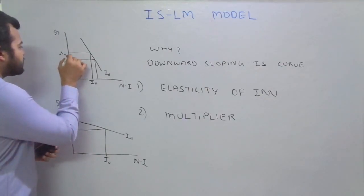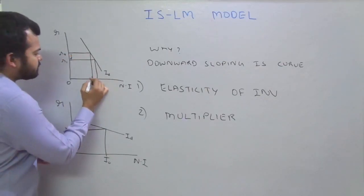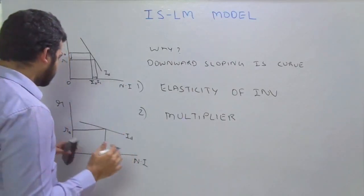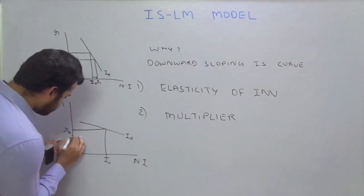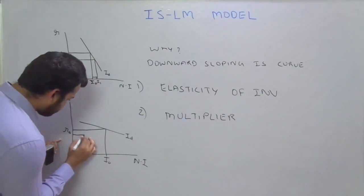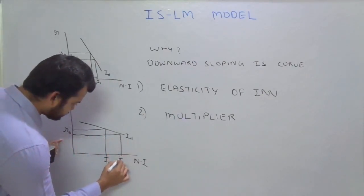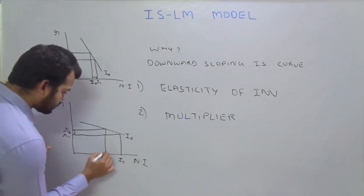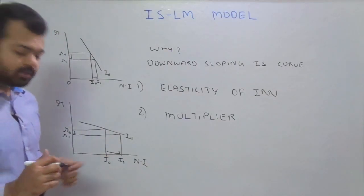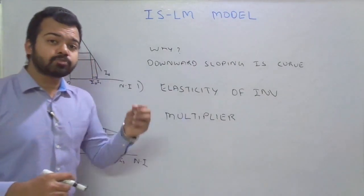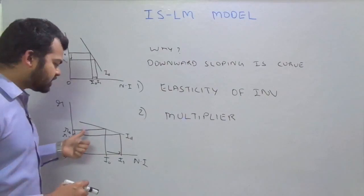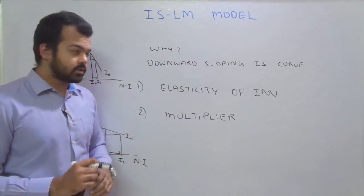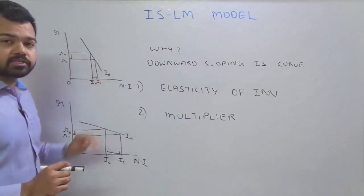In the other panel, if you reduce the rate of interest, investment increases manifold — meaning the responsiveness of investment to the rate of interest is high. The elasticity of investment determines the slope of the IS curve. Whenever you have a steep investment demand curve, it means investment is less responsive to interest rate changes.